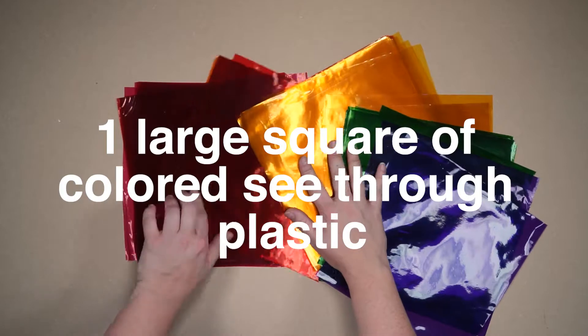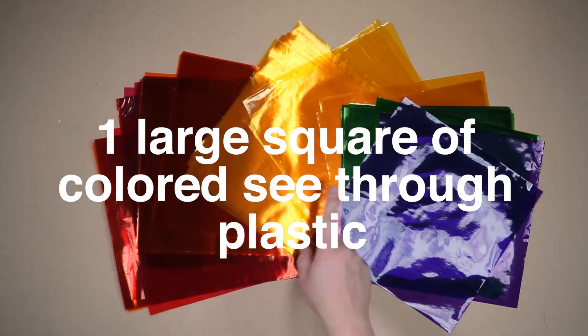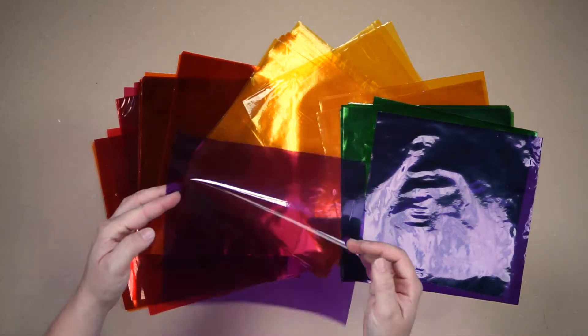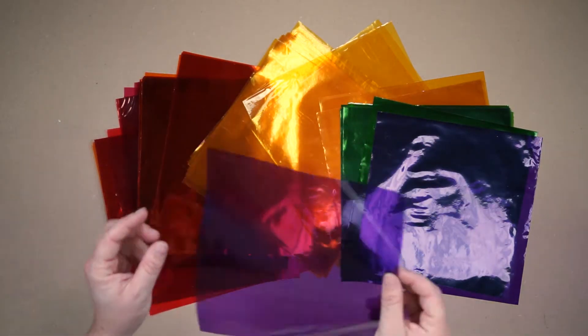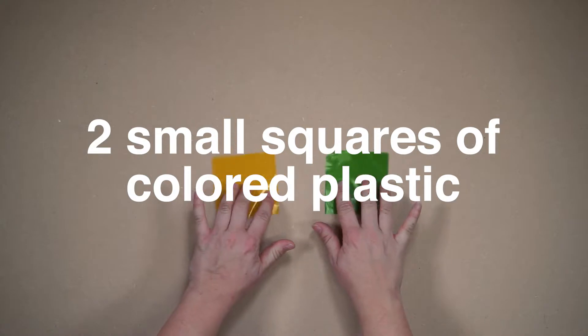Next you will need one large square of colored acetate or colored plastic. The acetate is see-through. This means you can layer it on top of other colors to create different versions of colors. You will also need two small squares of colored acetate.